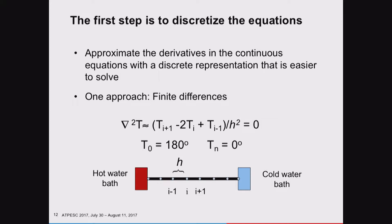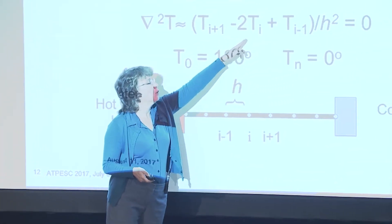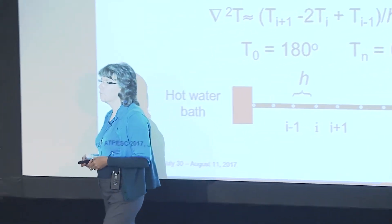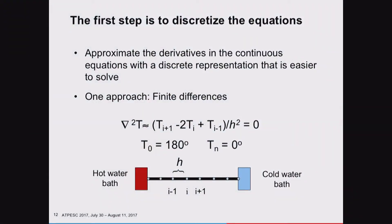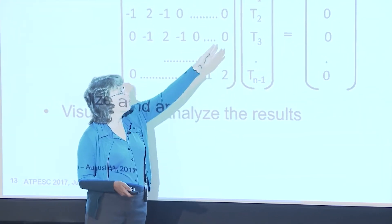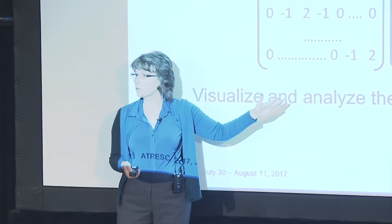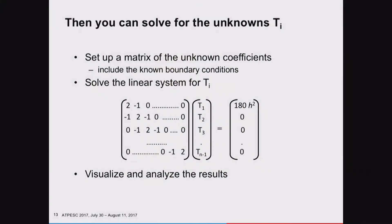What do we do with that? Intuitively, you can discretize it by thinking about the fact that any point on that rod is going to be the average in temperature of the points on either side of it. You can represent that diffusion operator with a discrete equation where any point T_i is the average of the points on either side, bringing in the spatial scale h. You've got your boundary conditions: T at zero is 180 degrees, T at n is zero degrees. Now that you've got your equation for each T_i, you can represent that as a linear system.